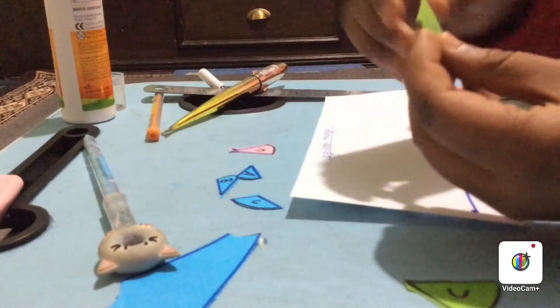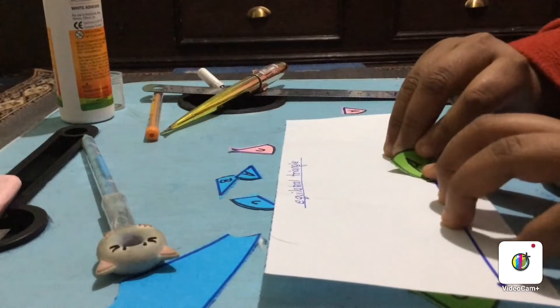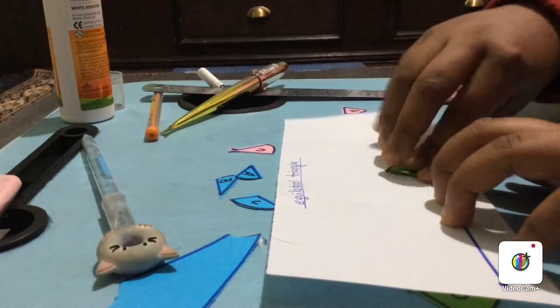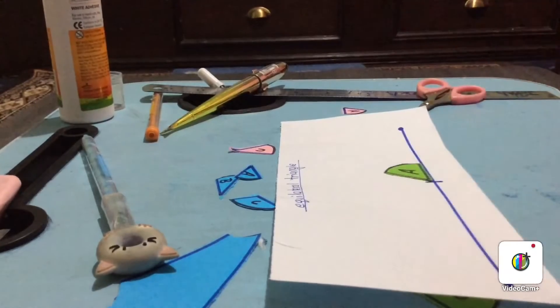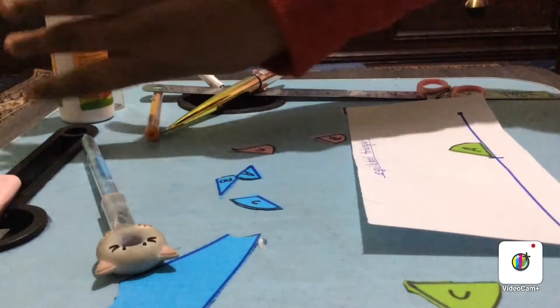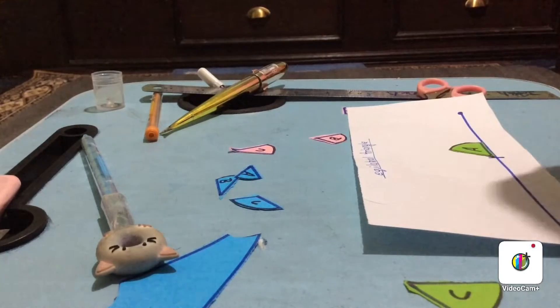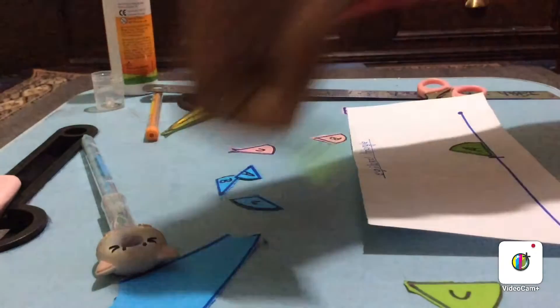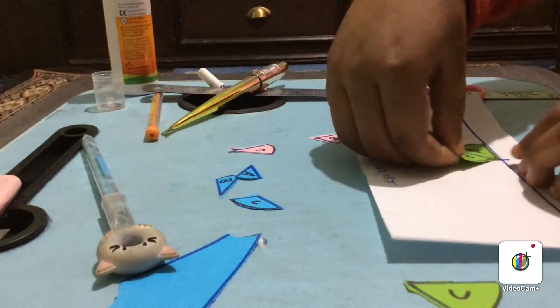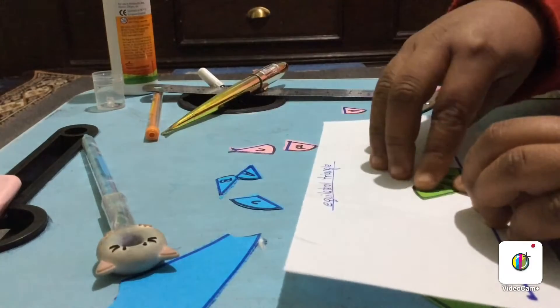Some glue on it, and by pointing the arrow which we have kept, I'm going to paste A on it at the right-hand side first, or you can keep it on the left-hand side. Same goes with B - some glue, and now I'm going to paste it next to A. It doesn't matter if it doesn't make a perfect half circle.